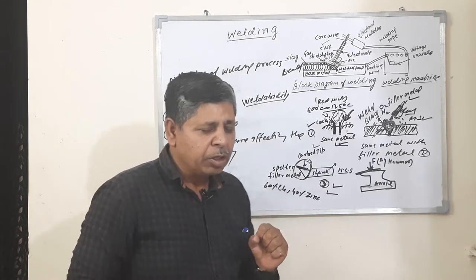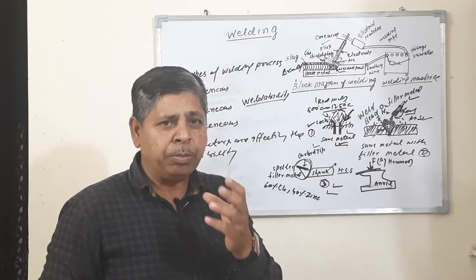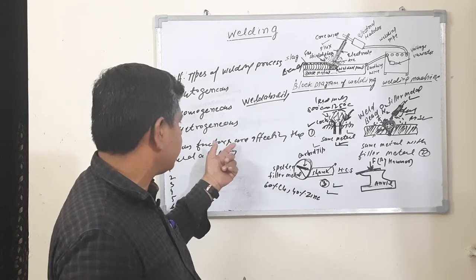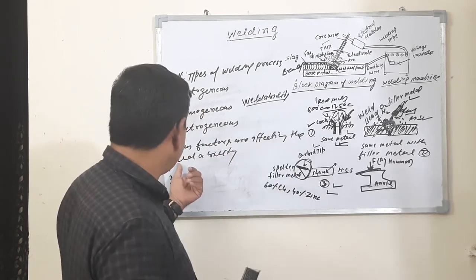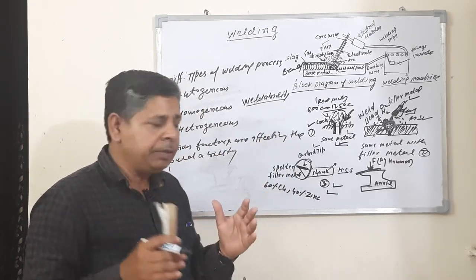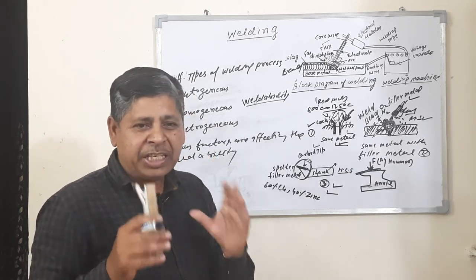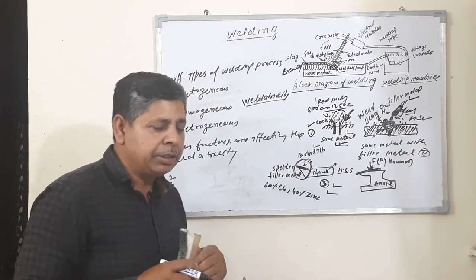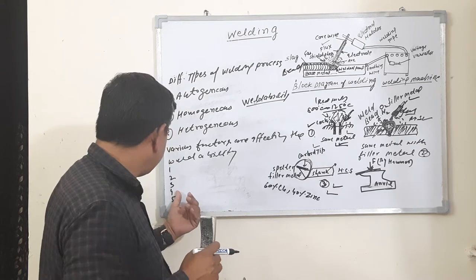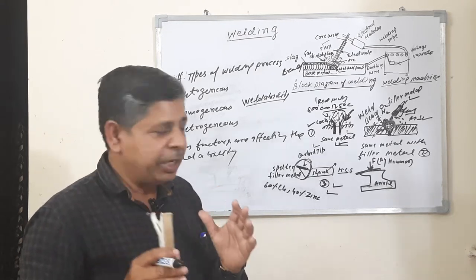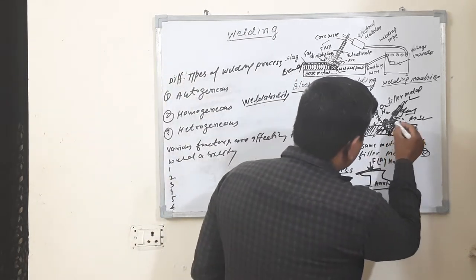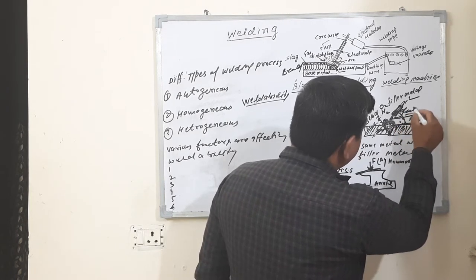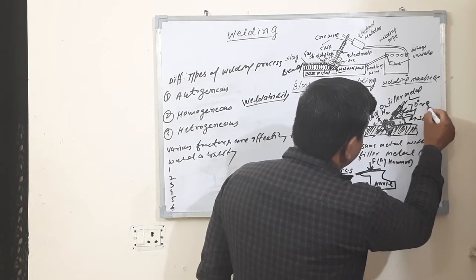Weldability is defined as the property of the material. Different factors affect weldability. Number one is the composition of the metal. Number two is the strength, hardness, and brittleness of the metal. Number three is the thermal property of the metal. Number four is good technique of welding — the electrode should be held at 70 to 80 degrees from the surface.